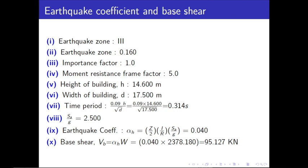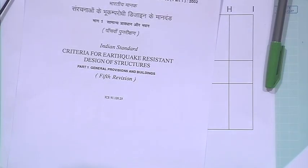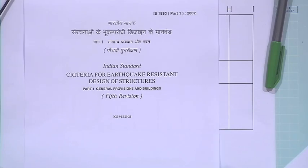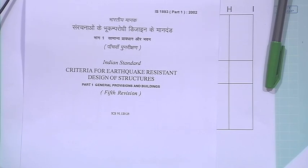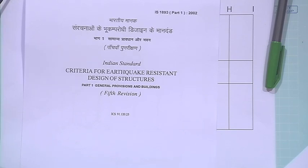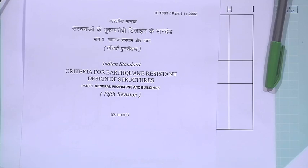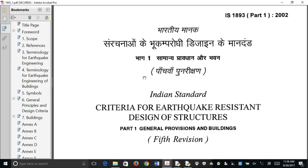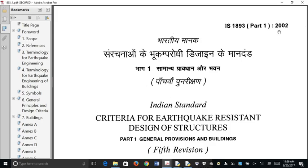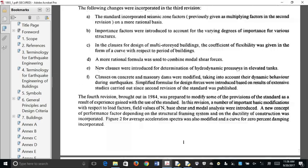We are following IS 1893 — the criteria for earthquake resistant design of structures. Let me show you on screen: we are following IS 1893, the 2002 version, which is the new one.